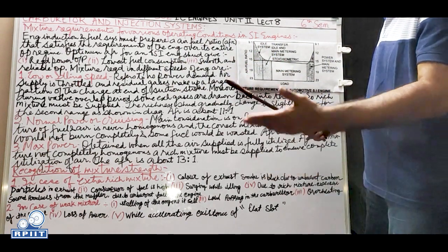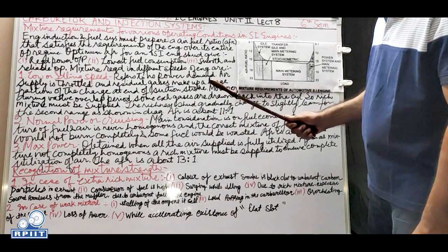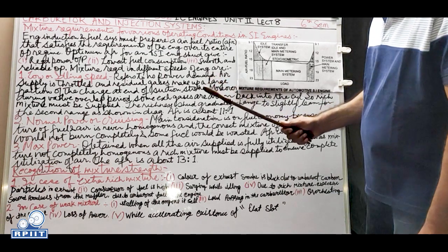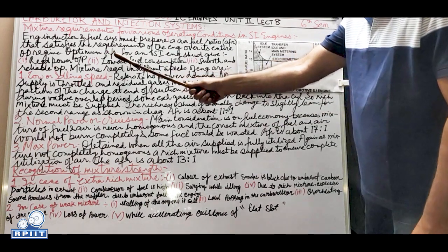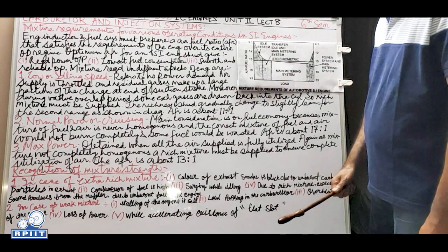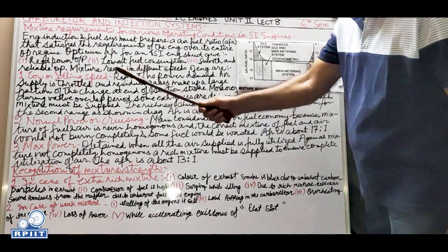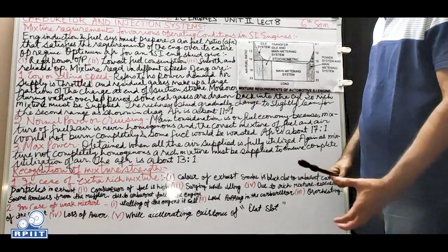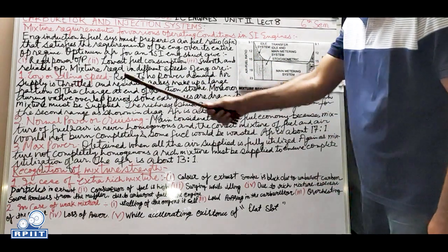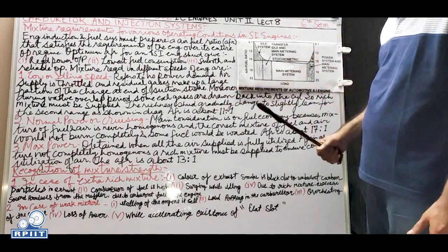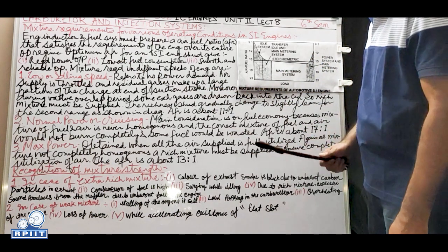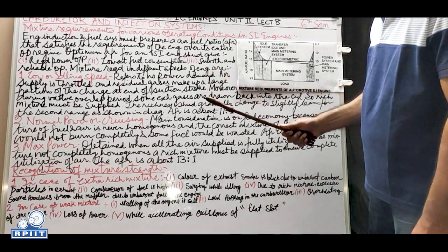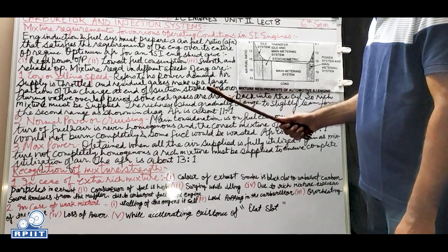From slow speed to high speed, all conditions should be satisfied by the engine induction and fuel systems. The optimum air-fuel ratio for an SI engine should provide: the required power output (whatever power output you need), the lowest fuel consumption for maximum mileage, and smooth and reliable operation without noise.